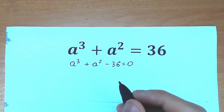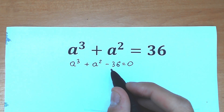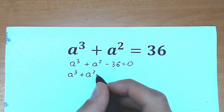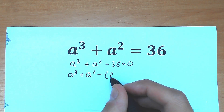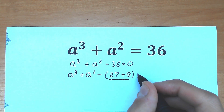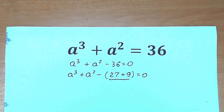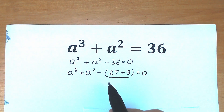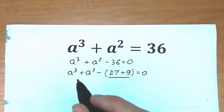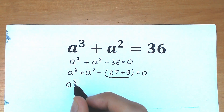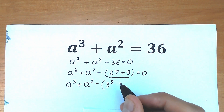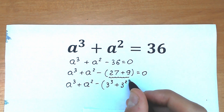Next, let's write 36 as 27 + 9. So we have a³ + a² - (27 + 9) = 0. This is a really great trick. We should know that 27 = 3³ and 9 = 3², so we replace them: a³ + a² - 3³ - 3² = 0.